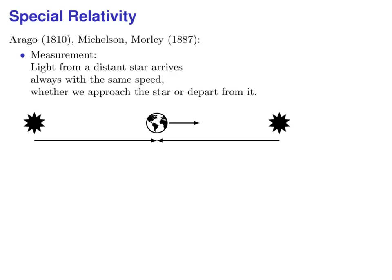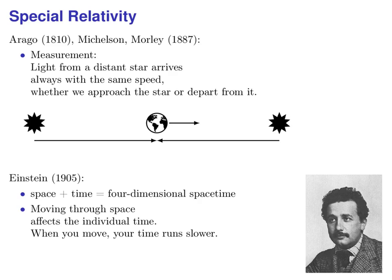Special relativity explains the strange behavior of light. For instance, when the Earth on its orbit around the Sun approaches a star or departs from it, then we measure that the speed of the light which reaches us from the star is precisely the same in both cases. How can that be? Special relativity explains this as follows. Space and time are not independent of each other, but they combine to a four-dimensional space-time. When you move through space, your time runs slower.